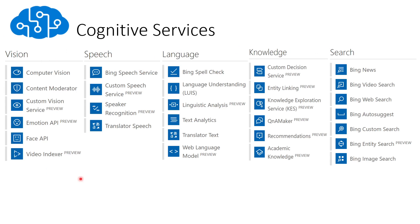For vision, there are different services that help us detect features in an image such as colors, description, and tags. If there are people, we can detect faces, the emotion, the age, whether it's male or female, if they're wearing accessories. There's also the content moderator — if in the image, video, or text there is racy or adult content, we can filter before sending the data to our index.